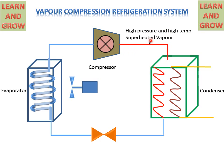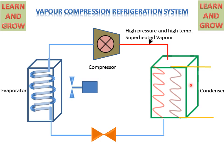High pressure and high temperature superheated vapour will be generated by the compressor and transferred to the Condenser. In the condenser, this superheated vapour will give its latent heat to the water or air which is used for cooling purpose in the condenser. Then this vapour will be converted into liquid, called saturated liquid.